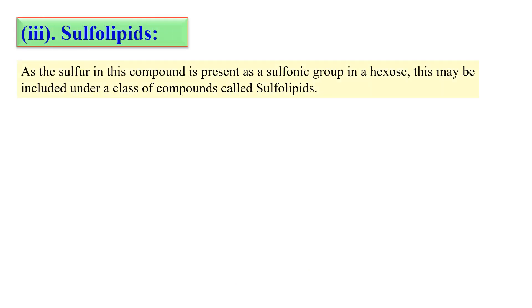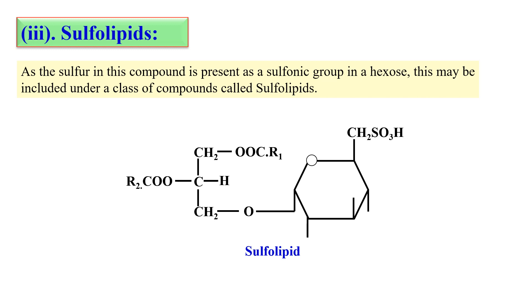The next type is sulfolipids. As the name indicates, the additional group here is the sulfur group. Looking at the structure, this is the basic structure of a sulfolipid where glycerol is attached with two fatty acids, and the third carbon is attached with a hexose molecule having a sulfonic group. So this is all about compound lipids and their various types. See you in the next video — take care and thank you very much.